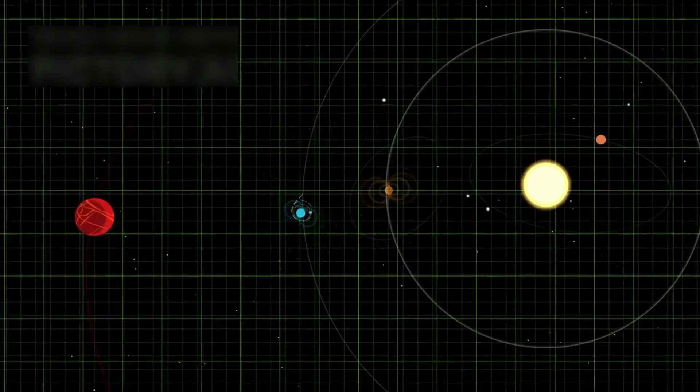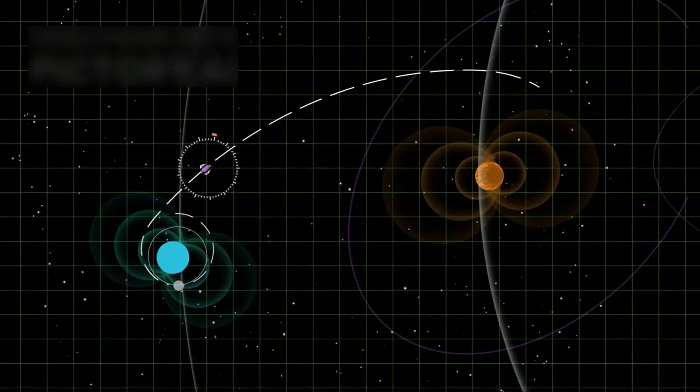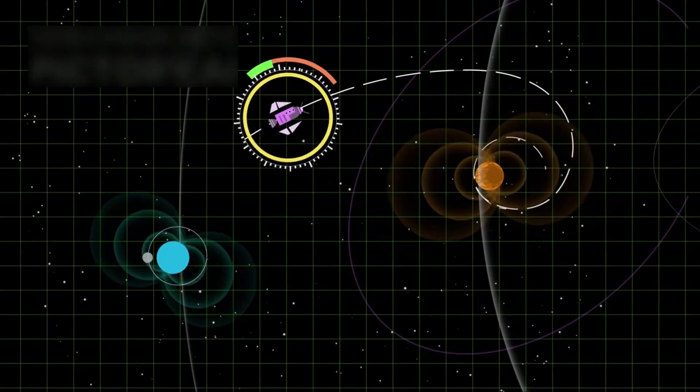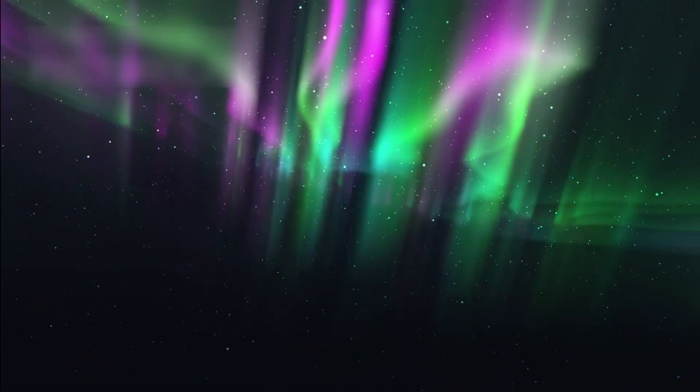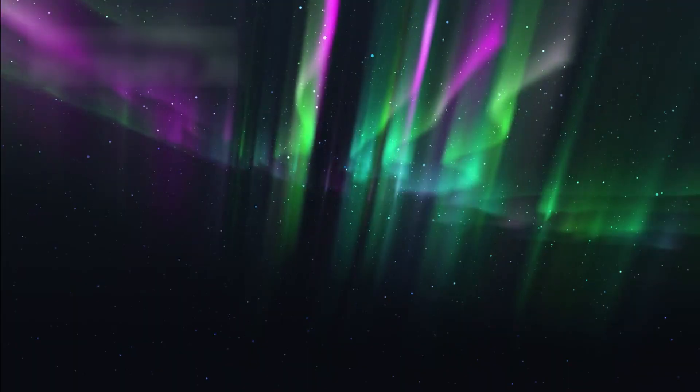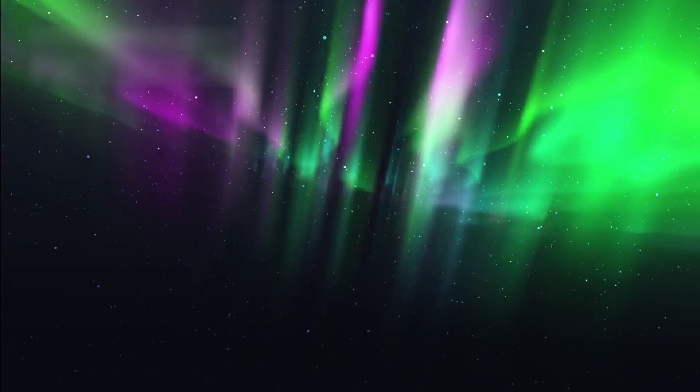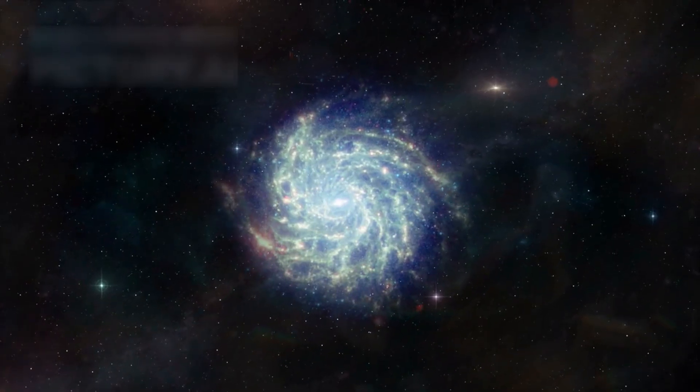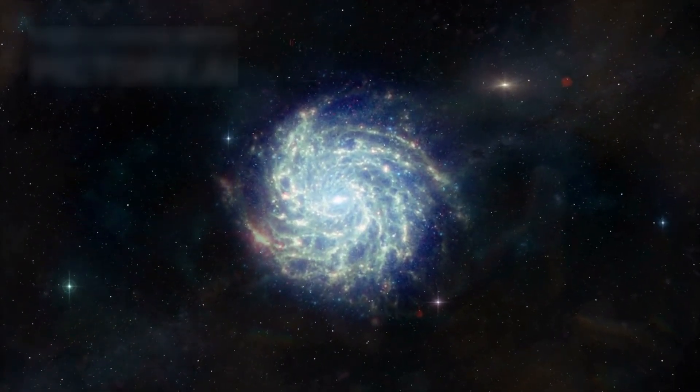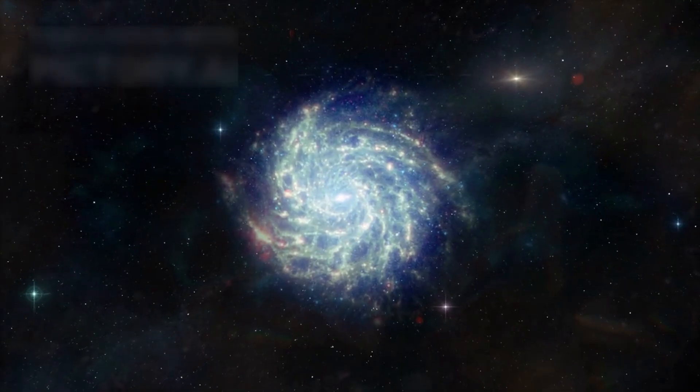Voyager also found a new boundary, a zone where solar particles fade and interstellar ones dominate. Understanding this region helps scientists learn how cosmic rays enter our solar system, and how stars interact with their surroundings. It's not just space exploration, it's a deeper understanding of our place in the galaxy.